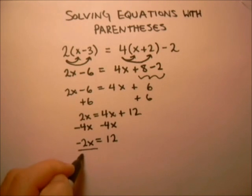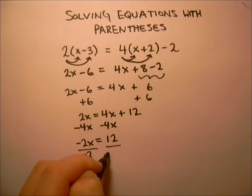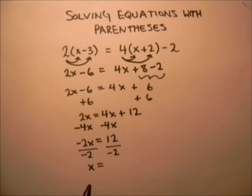Last of all, we divide by what's multiplying x, which is the negative 2, leaving us with x equals 12 divided by negative 2, equals negative 6.